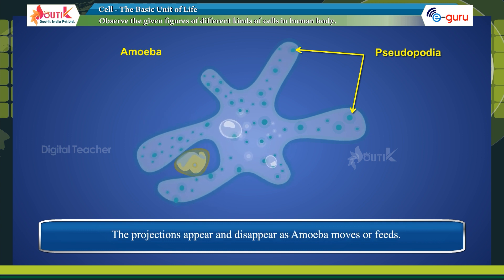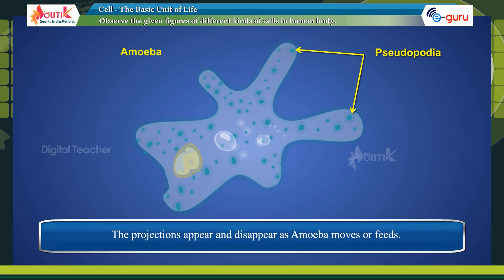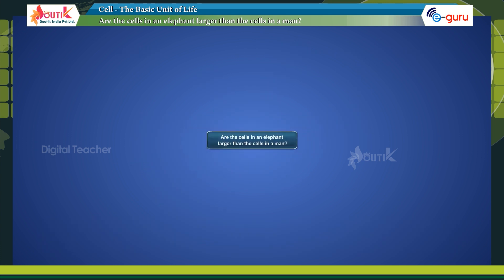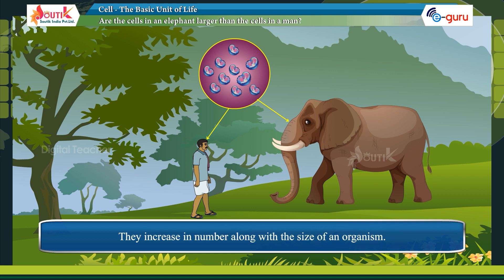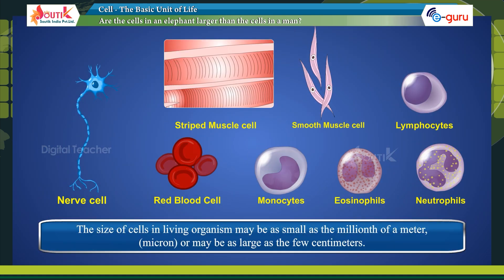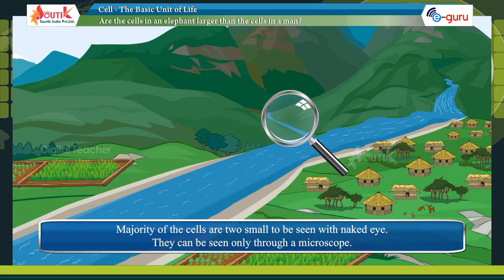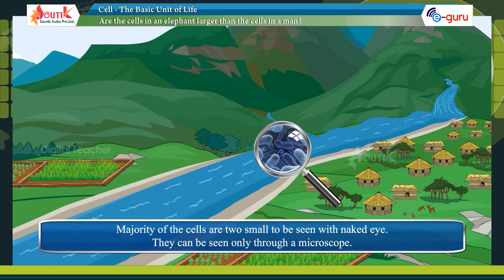Are the cells in the elephant larger than the cells in man? Even though the cells are smaller in size, by repeating cell division they increase in number along with the size of an organism. The size of cells in living organisms may be as small as the millionth of a meter or may be as large as a few centimeters. Majority of the cells are too small to be seen with the naked eye; they can be seen only through a microscope.